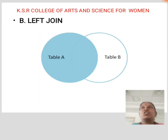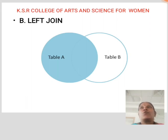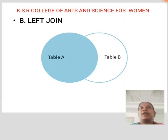Left Join: This join returns all the rows of the table on the left side of the join and matching rows from the table on the right side of the join. For rows for which there is no matching row on the right side, the result set will contain null. Left Join is also known as Left Outer Join.